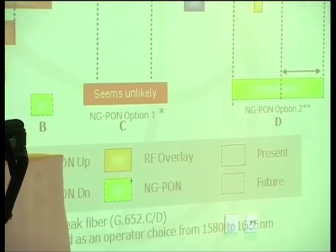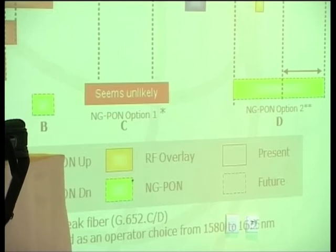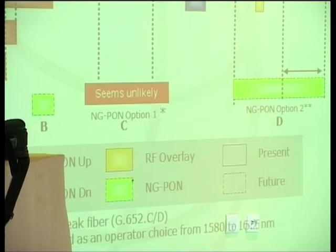This is the same diagram as before with one difference. This is not an ITU position, but a consideration taken from operators and vendors: NG-PON option 1, using G.652.C or .D fiber, will likely not be used since many G-PON systems currently deployed do not use that kind of fiber.